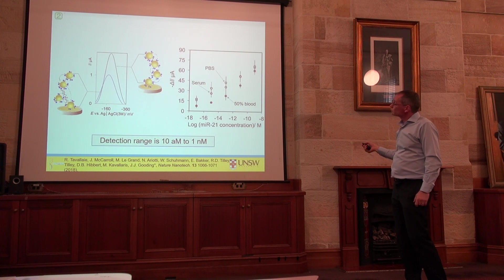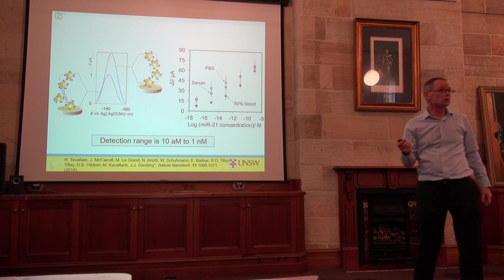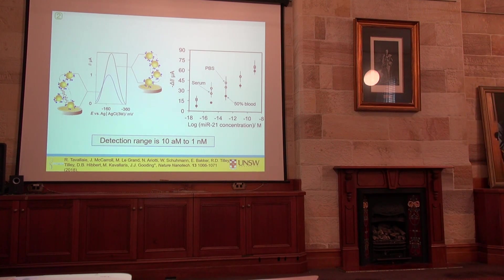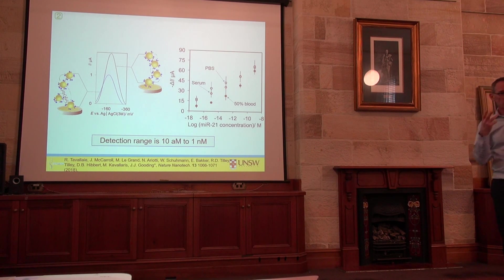With nothing captured you get one big peak; with something captured you get a smaller peak. In buffer we could get down to 10 attomolar — about 12,000 molecules. Then we tried putting it in serum expecting it to fail, and it didn't fail. We could also work in 50% blood after lysing the exosomes. We then took A549 lung cancer cells, isolated and lysed the exosomes, measured in buffer or serum with the sensor, and compared to quantitative PCR. We got essentially the same response, except working directly from cell extract without purification.